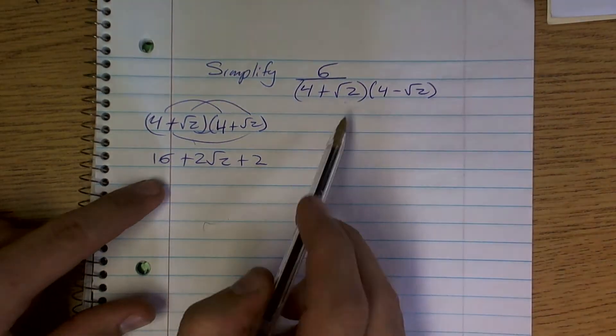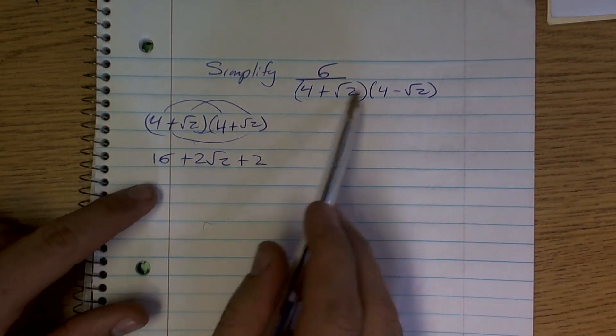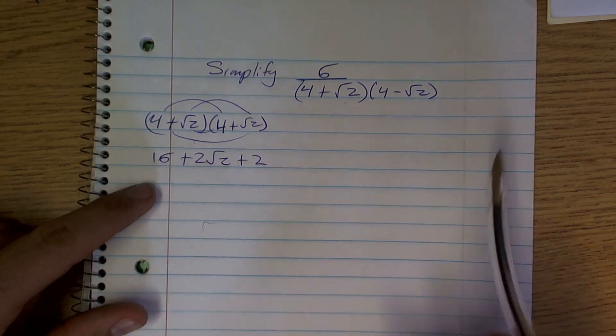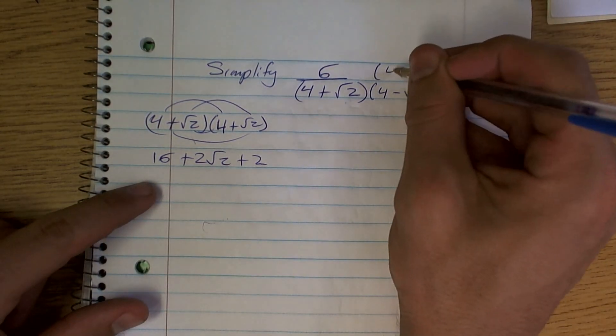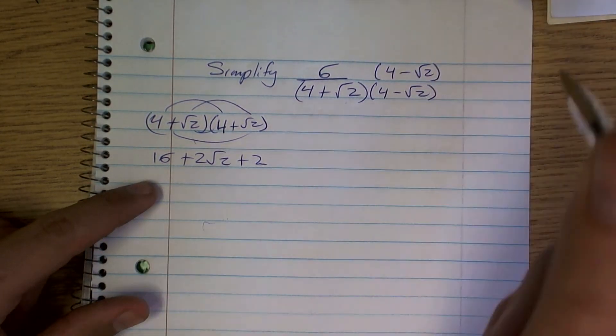So we have to multiply by the conjugate, which you can see is going to be a difference of two squares. And whenever you multiply on the bottom, you have to make sure you multiply on the top, which you showed.